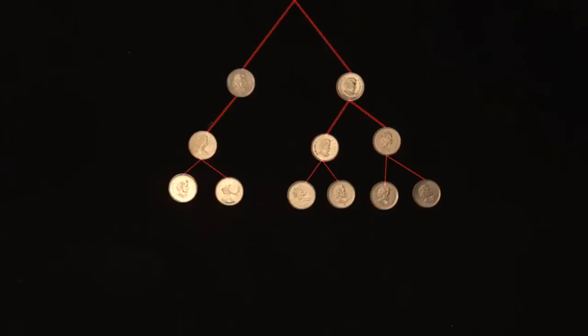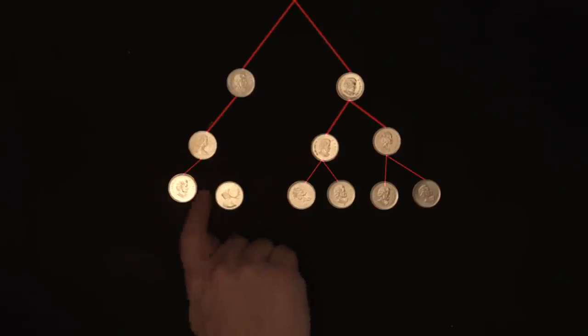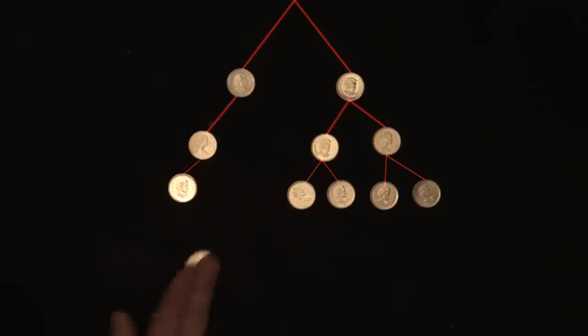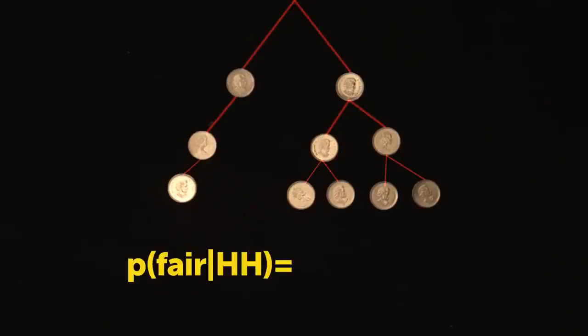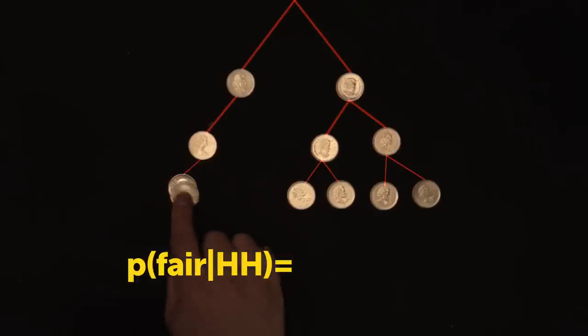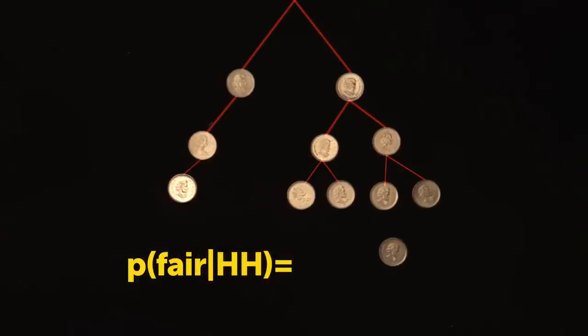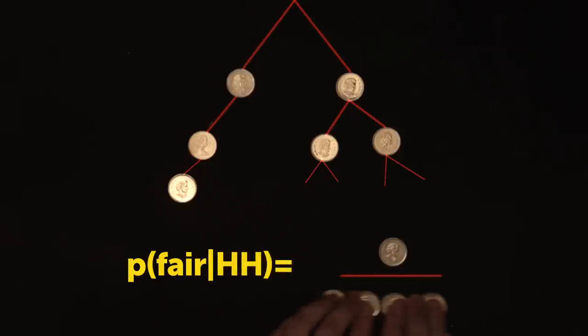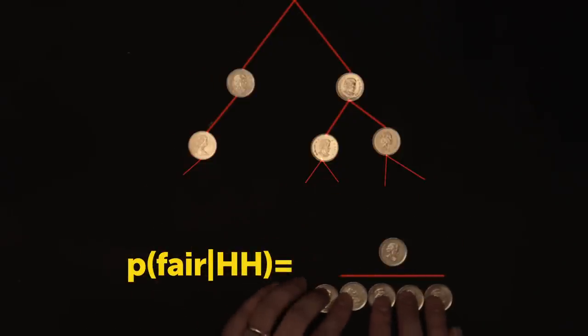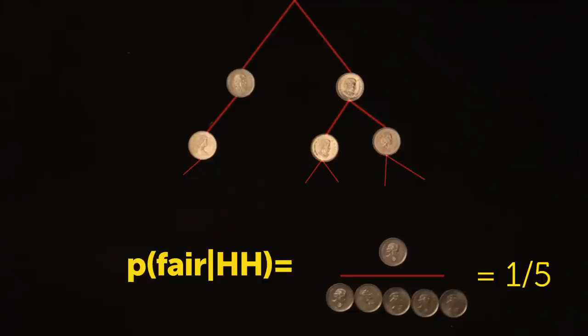After we hear the second heads, we cut any branches leading to tails. Therefore, the probability the coin is fair after two heads in a row is the one fair outcome leading to heads divided by all possible outcomes leading to heads, or one fifth.